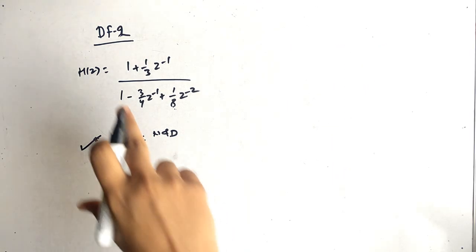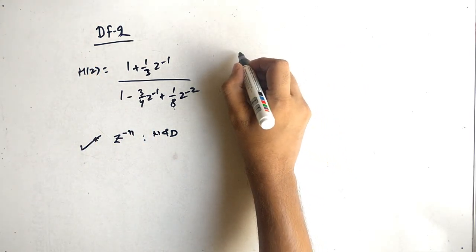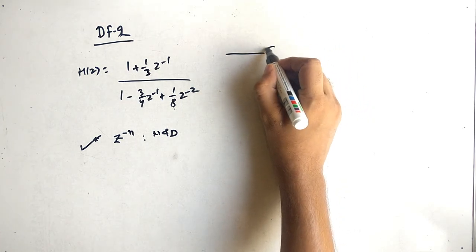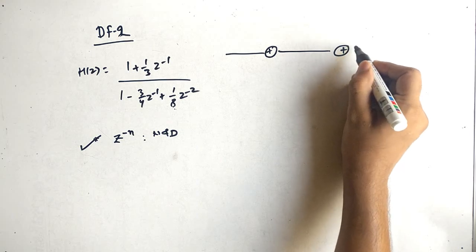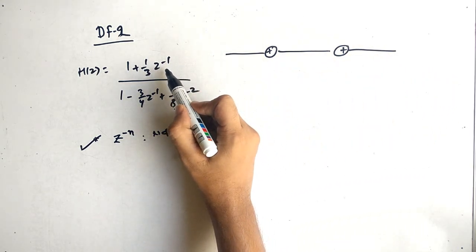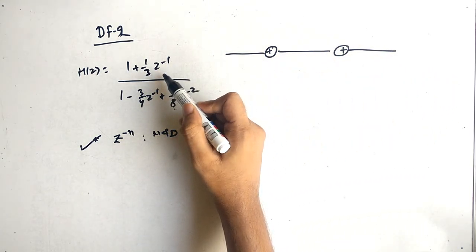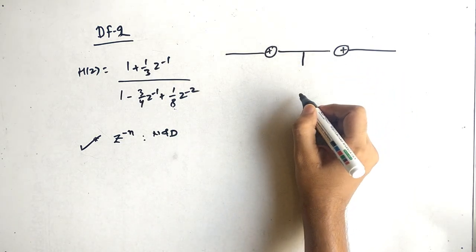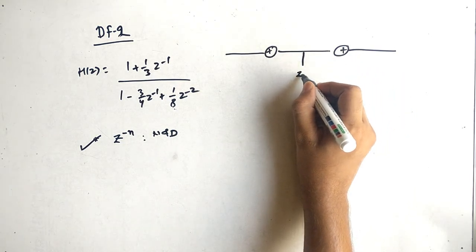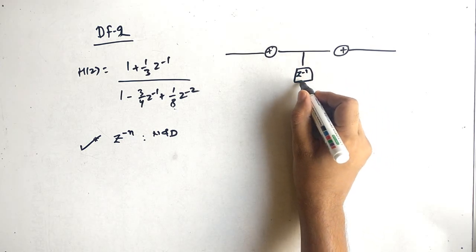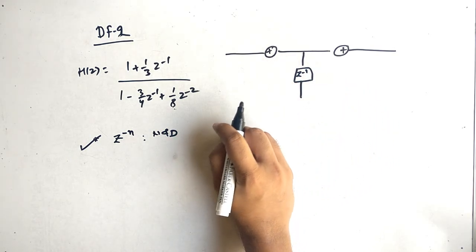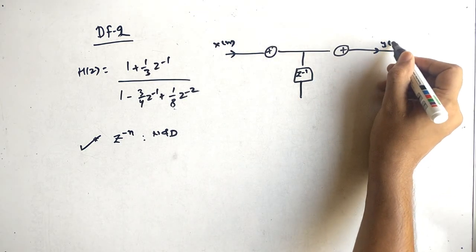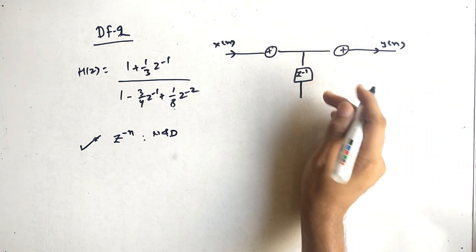Now we are talking about direct form 2. Direct form 2 says that we should have only one delay term which is common for both poles and zeros — z⁻¹ is common for poles and zeros. So we have to reduce the delay part. First we will write the delay. So basically this is x of n, this is y of n, and z⁻¹.